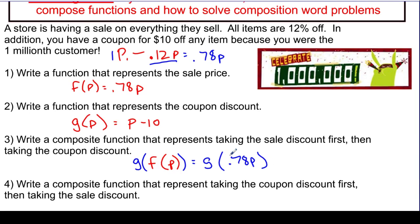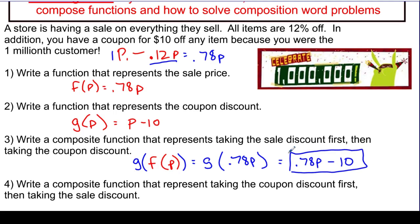This means go to the g function, find p, and plug in 0.78p. So the new function for taking the sale discount first, then the coupon, is just 0.78p minus 10. This expression represents taking the percentage sale first, then subtracting the $10 coupon off.